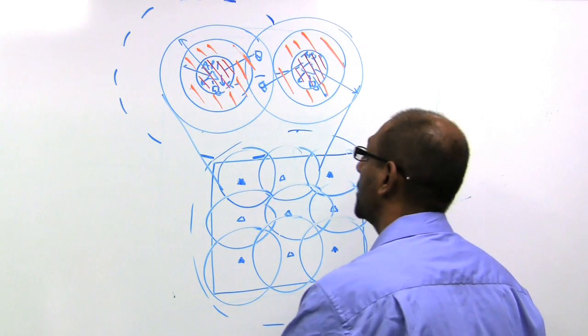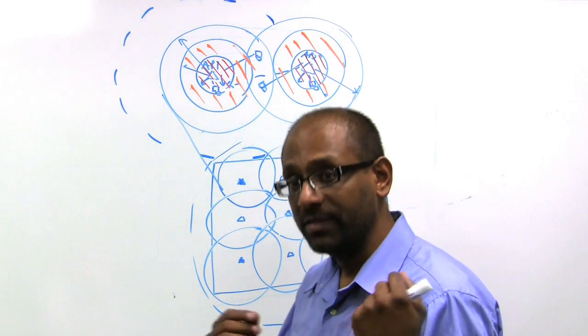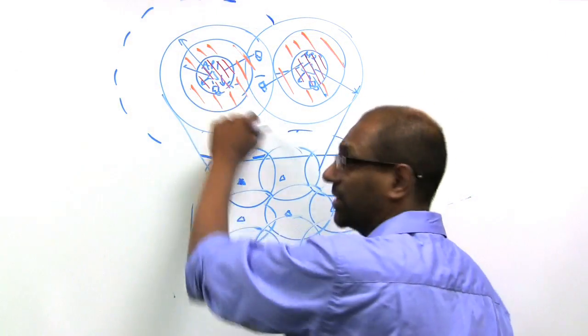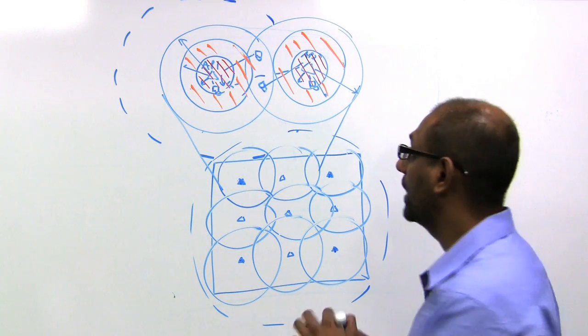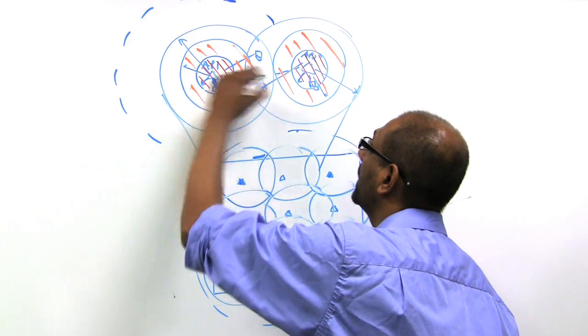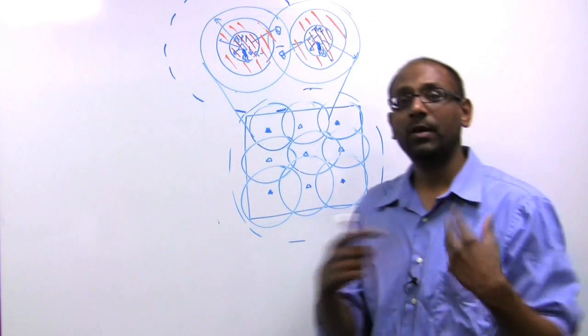So every access point, in addition to advertising its load, also says among its active receivers, which is the one that is furthest away. And if the network so determines that it can in fact enable simultaneous transmissions, then it actively goes and does that.